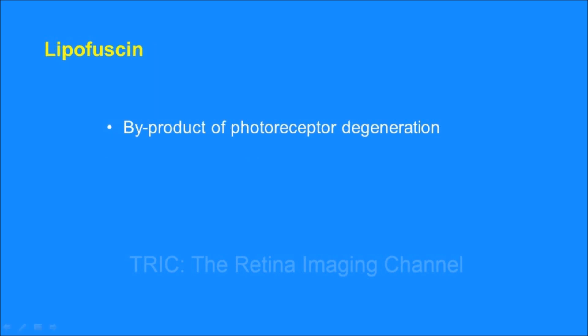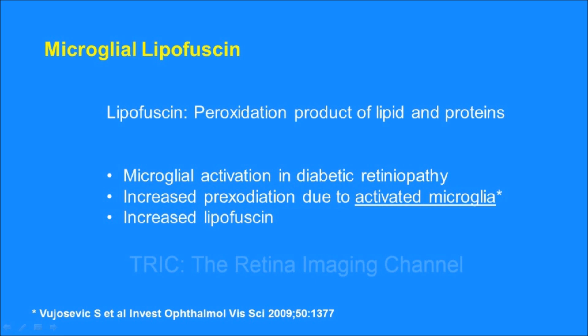Autofluorescence in the diabetic eye is studied mainly at the fovea. We know that lipofuscin is a byproduct of photoreceptor degeneration. However, lipofuscin is also a peroxidation product of lipid and protein. Microglial activation, which happens in diabetic retinopathy, causes increased peroxidation of lipid and protein, leading to accumulation of lipofuscin and hence hyperautofluorescence. This lipofuscin is called microglial lipofuscin.